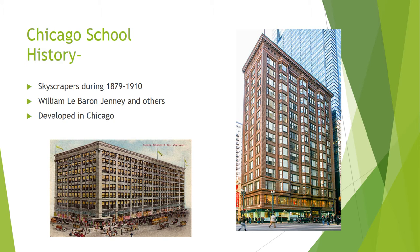The Chicago School Style is a term that refers to skyscraper architecture during 1879 to 1910. It was developed by designer-engineer William Le Baron Jenney and multiple other architects. One reason it was named after Chicago was because it was the location of the development of this design.